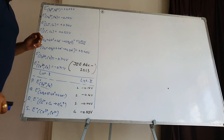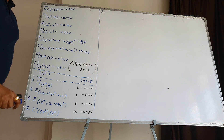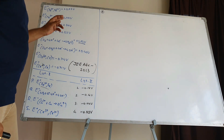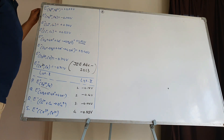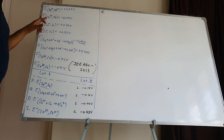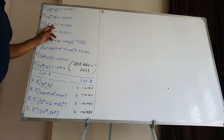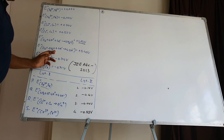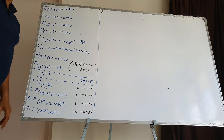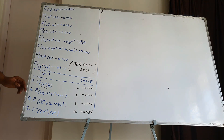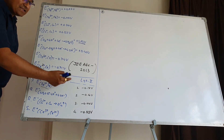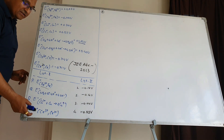Today we are taking one question from JEE Advanced 2013, based on electrochemical cells and Gibbs free energy. In this question, reduction potentials are given for: Fe³⁺/Fe²⁺, Fe²⁺/Fe, Cu²⁺/Cu, and Cu⁺/Cu. You are asked to find E⁰ for Fe³⁺/Fe and other reactions.